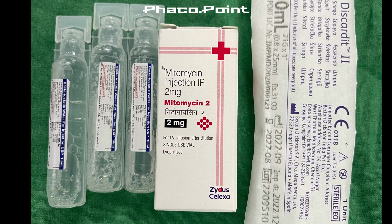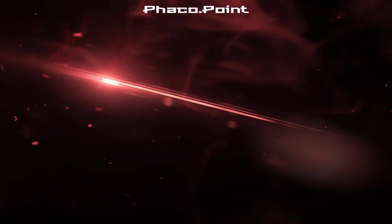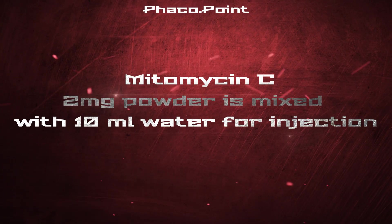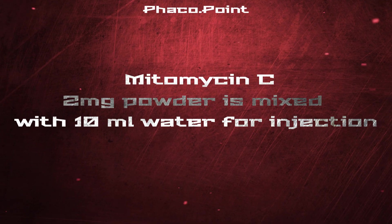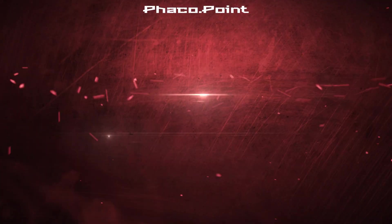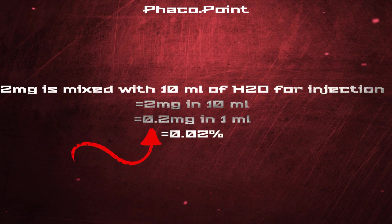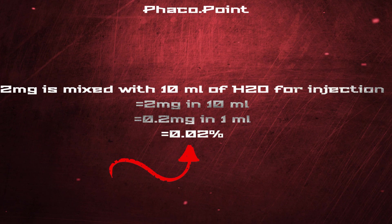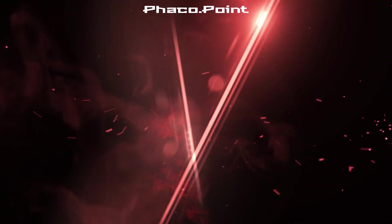Mitomycin C is available in a vial containing 2 mg of Mitomycin C powder. This 2 mg powder needs to be reconstituted with 10 ml of water for injection, giving you 2 mg in 10 ml. This also works out to 0.2 mg in 1 ml, which gives you the correct concentration of 0.02%. This reconstituted Mitomycin C at 0.02% is optimal for ophthalmic use.